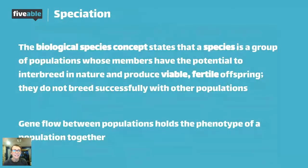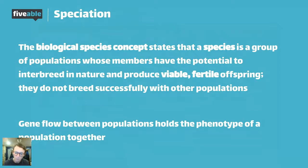A really important thing to establish is that if we're talking about speciation — which is what macroevolution is — we need to talk about what a species is. We have a number of different ways to identify or name what a species is. There are four major ways, but the one most commonly accepted is the biological species concept.